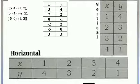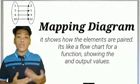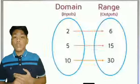The second way is the mapping diagram. A mapping diagram shows how the elements are paired. Lines or arrows are drawn from domain to range to represent the relation between any two elements.